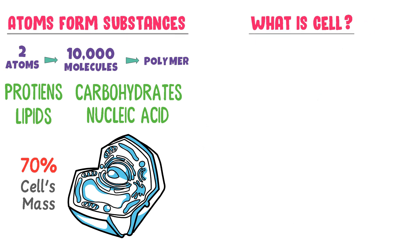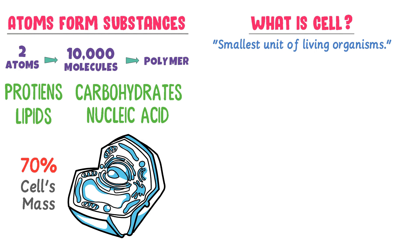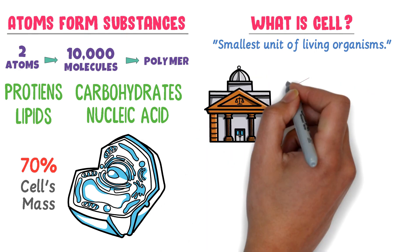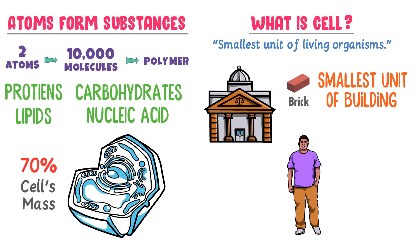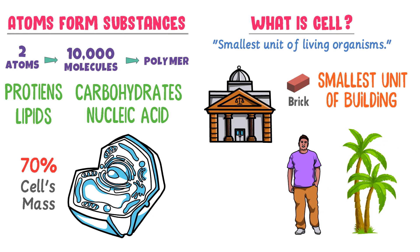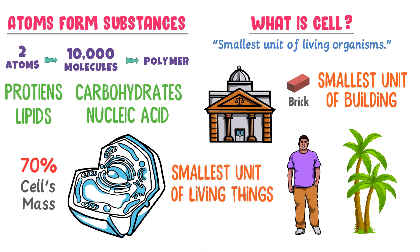What is a cell in biology? Cell is the smallest unit of living organisms or life. Consider a building — we know that a building is formed from bricks, and brick is the smallest or basic unit of the building. Similarly, both man and tree are formed by many cells, so cell is the smallest unit or basic unit of living things, just like a brick.